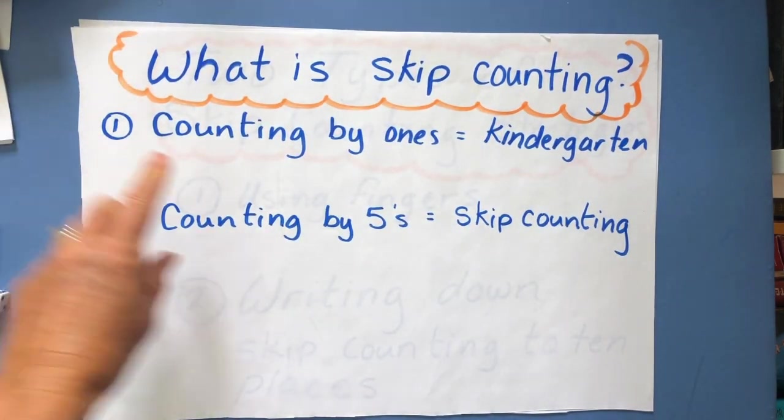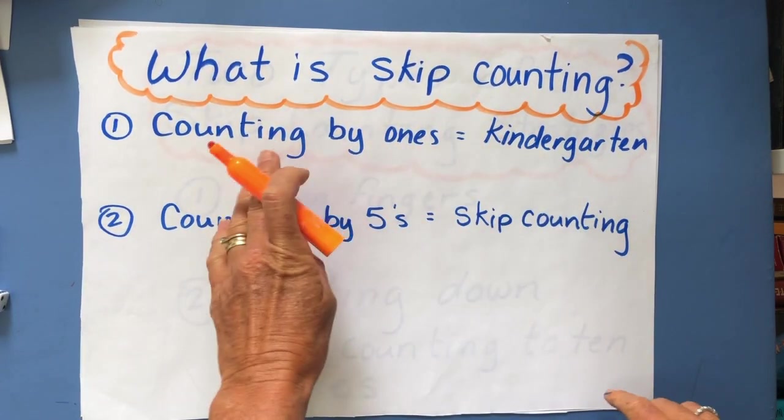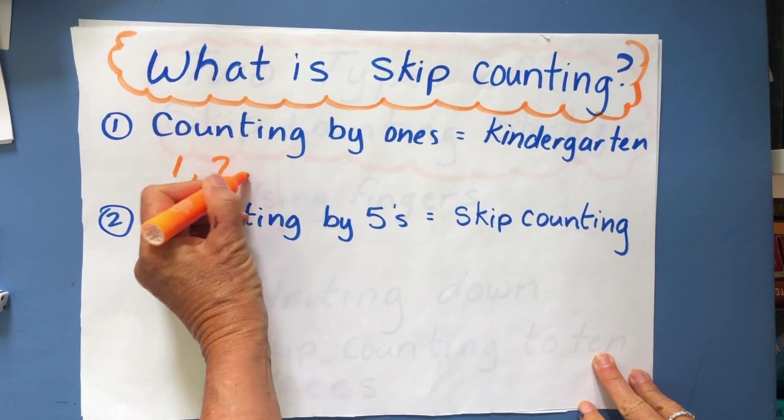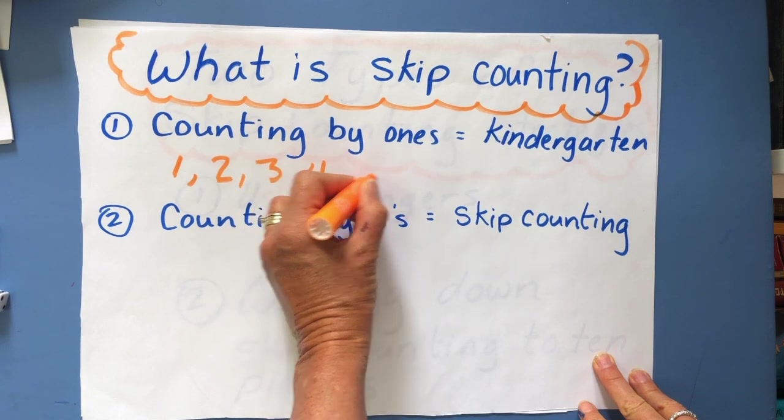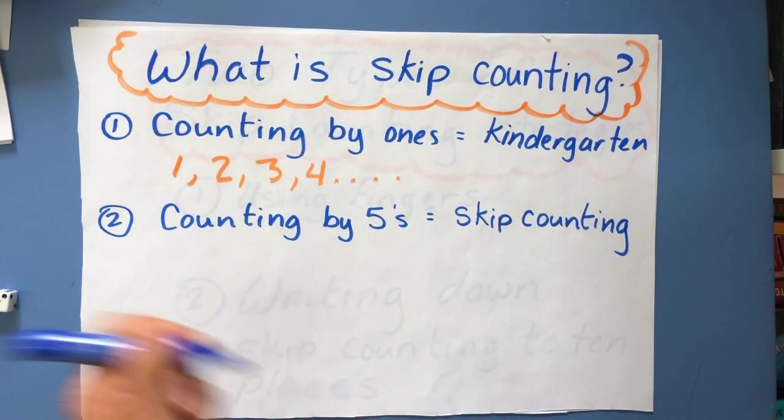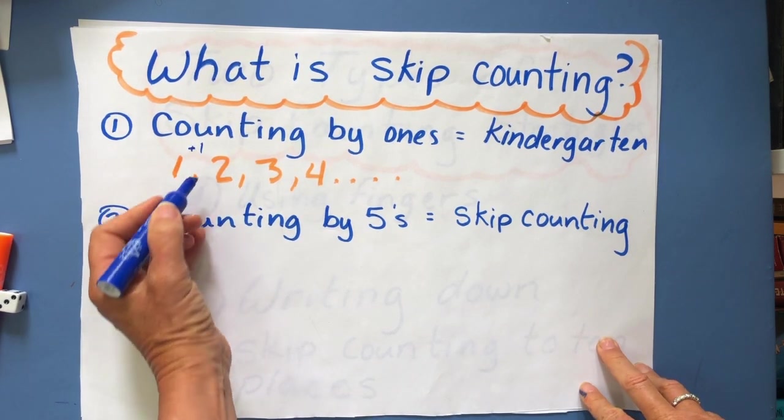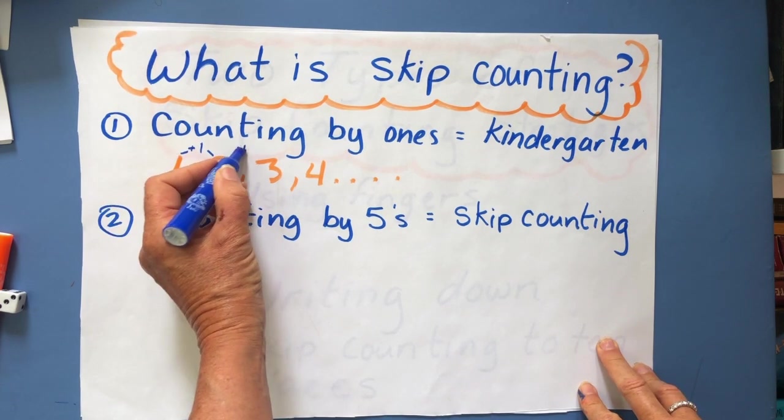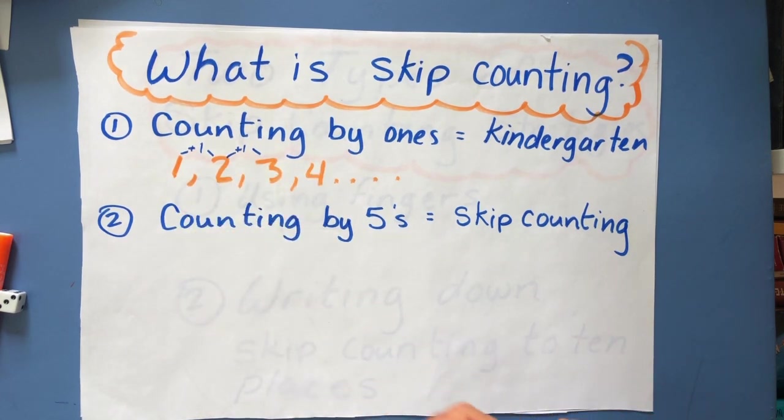So what is skip counting? Well, when you were in kindergarten, you learned to count by one. So you learned to count one, two, three, four, and so on. So you were really skip counting by ones. To each one of these numbers, you just added a one. So one plus one more would be two, and then two plus one would be three, and then three plus one would be four, and so on.